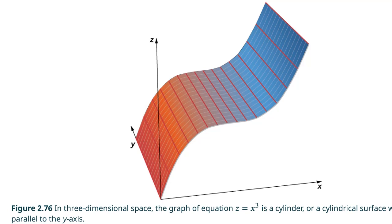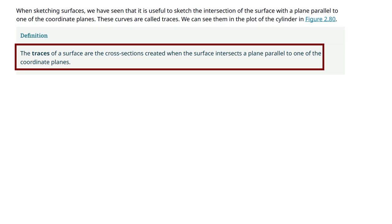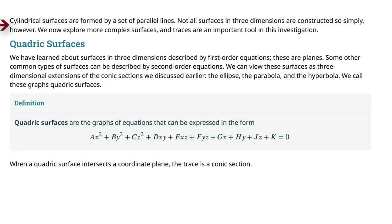The cylinder must run up and down the y-axis. When we sketch a surface, it's very useful to sketch the intersection of the surface with a plane parallel to one of the coordinate planes. These curves are called traces. By definition, the traces of a surface are the cross sections created when the surface intersects a plane parallel to one of the coordinate planes. Cylindrical surfaces are formed by a set of parallel lines.